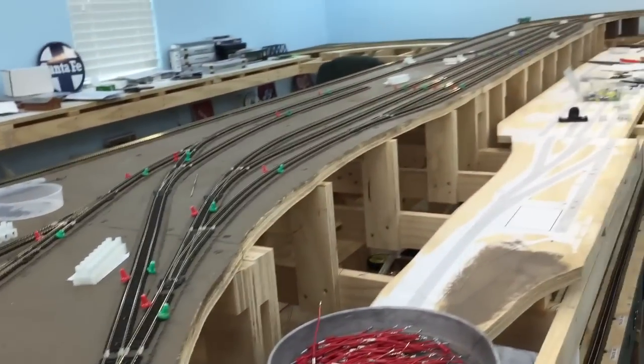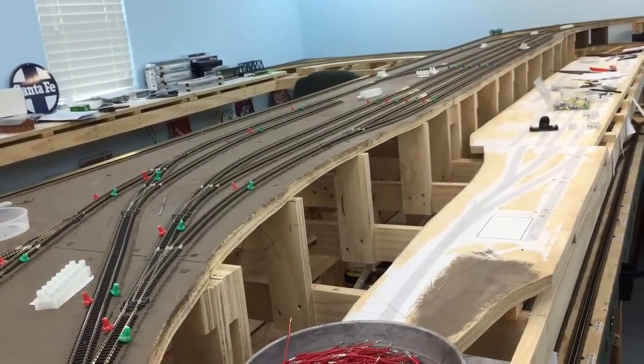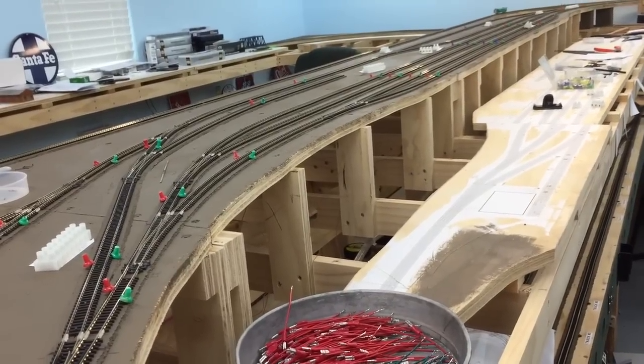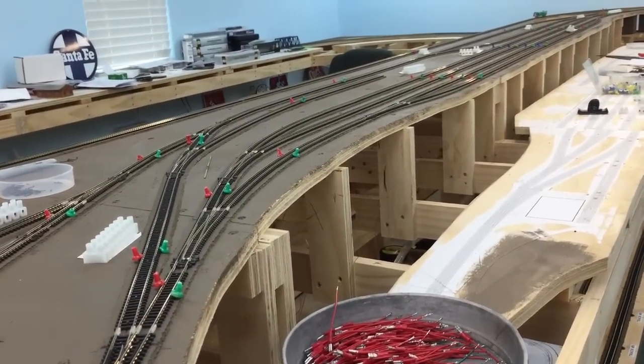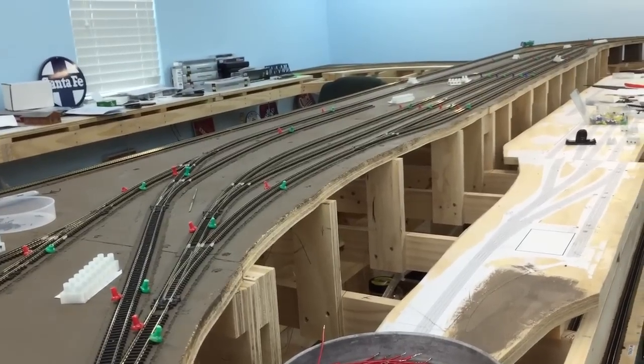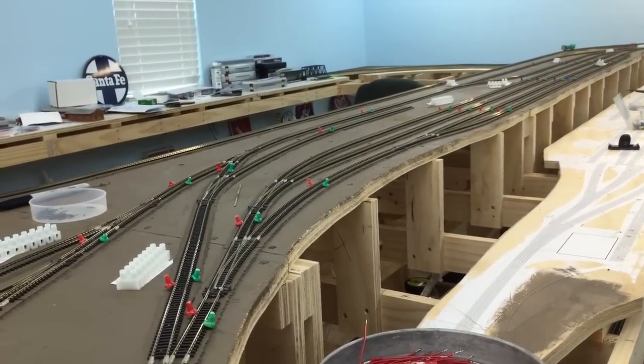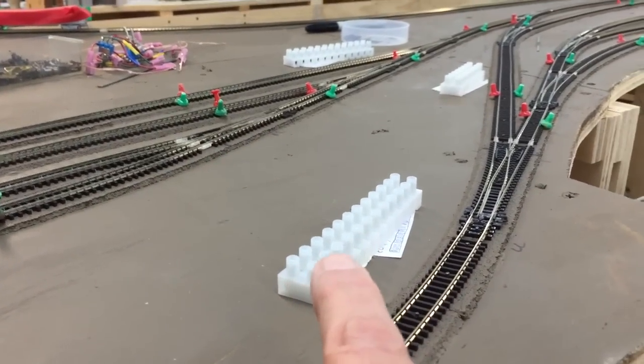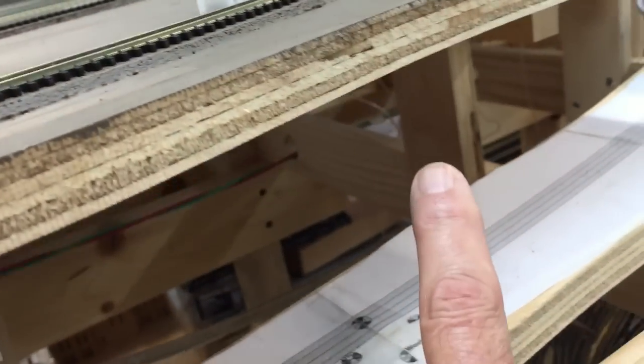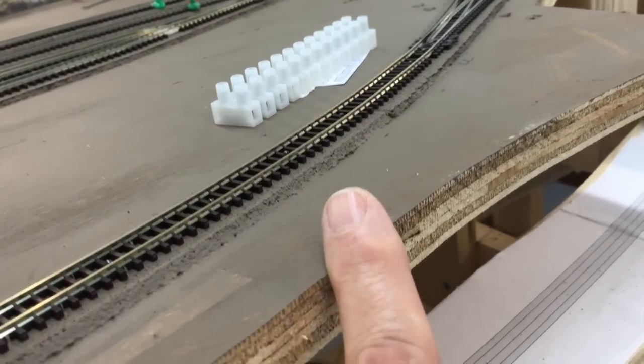And then what I'll do is get the soldering iron and solder those to the track. All the joints in the track that need to be soldered. And then after that, I'll be putting them underneath the layout in different places, generally underneath where they're at.